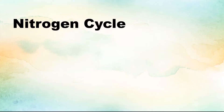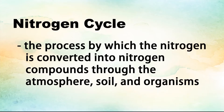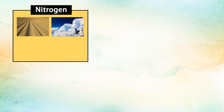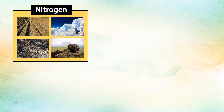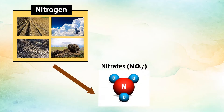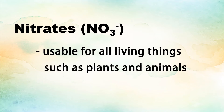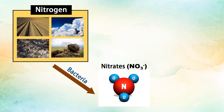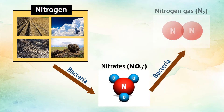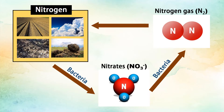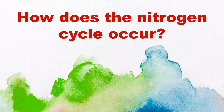What is the nitrogen cycle? The nitrogen cycle is the process by which nitrogen is converted into nitrogen compounds through the atmosphere, soil, and organisms. The nitrogen from the atmosphere, soil, organic matter, and animal wastes are converted into nitrates by specialized bacteria to make it usable for all living things such as plants and animals. These nitrates will be converted back into nitrogen gas and returned into the atmosphere, wherein a new cycle will start again.